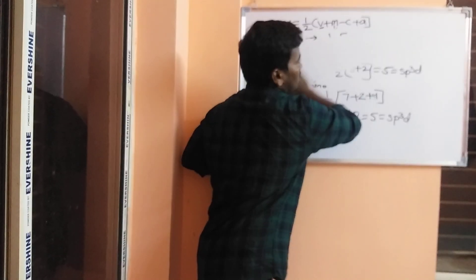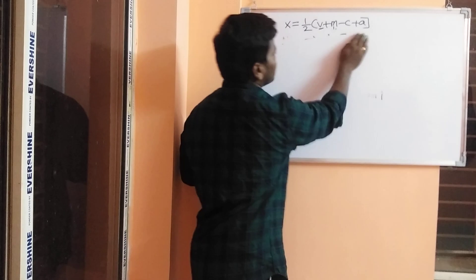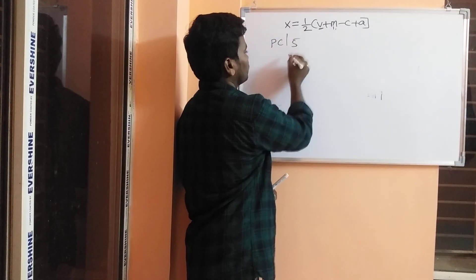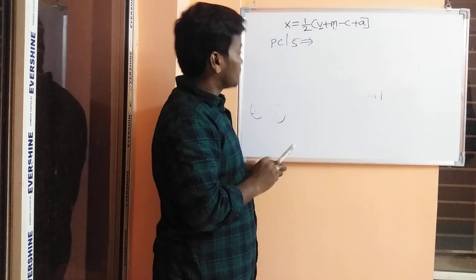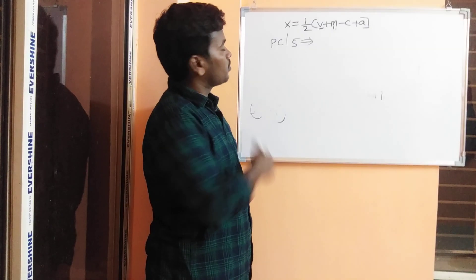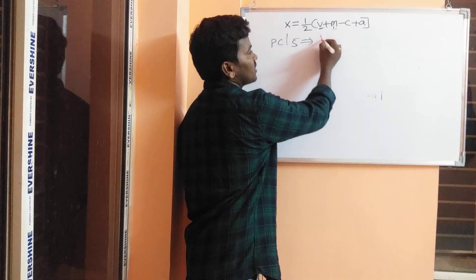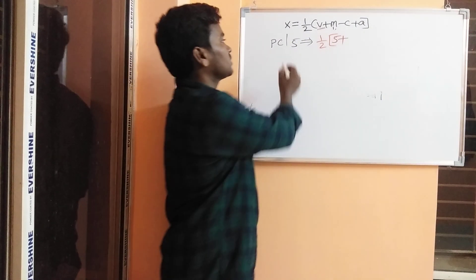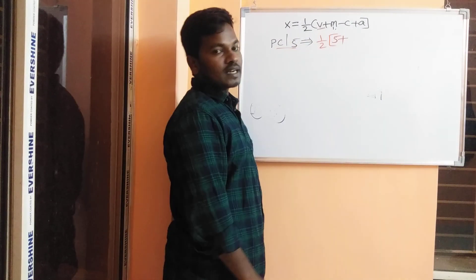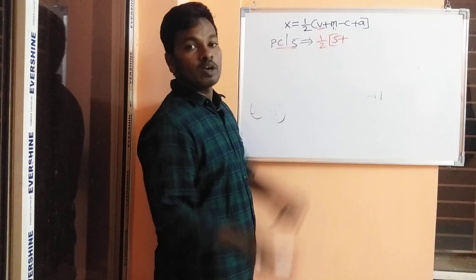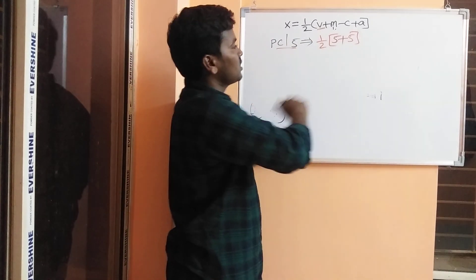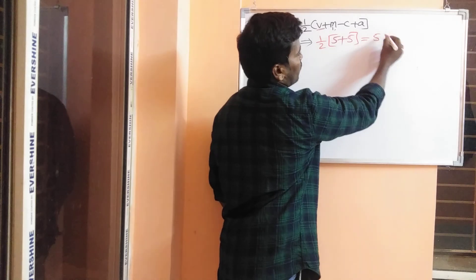Next: PCl₅. The central atom is phosphorus, which has 5 valence electrons (V equals 5). Chlorine is also monovalent, and there are 5 chlorine atoms (M equals 5). There is no charge on cation or anion. One by two of (5 + 5) equals 5, so PCl₅ has sp³d hybridization.